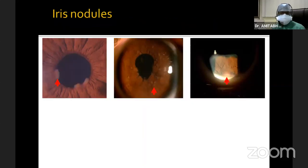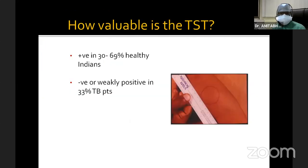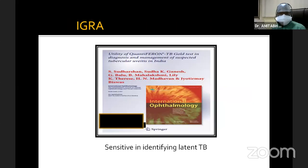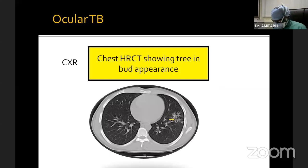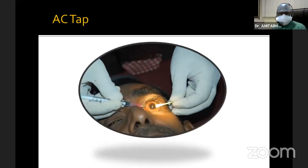If we have a patient with iris nodules — Koeppe nodules, Busacca nodules — we know we are dealing with a granulomatous anterior uveitis and would want to rule out the common granulomatous etiologies of tuberculosis and sarcoidosis. A tuberculin skin test could be positive in 30–69% of healthy Indians, or negative or weakly positive in 33% of TB patients. The other test available is a Quantiferon TB-Gold test, which is sensitive in identifying latent TB. Imaging in tuberculosis could be a chest X-ray or HRCT chest showing a tree-in-bud appearance. In case of doubt, the patient can undergo an anterior chamber tap and send the aqueous sample for PCR for Mycobacterium tuberculosis.